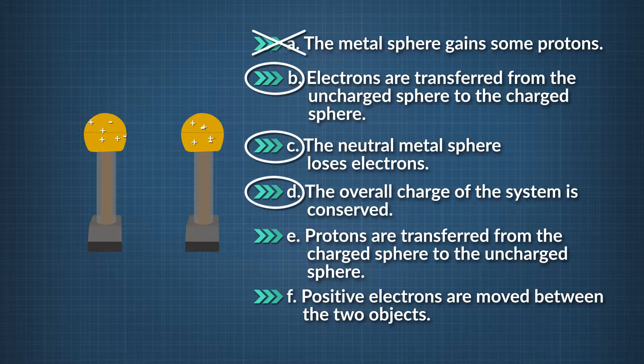E assumes protons and metals are mobile, but we've seen that the way atoms are arranged in metals means they are not. F gets the part about electron transfer right, but electrons have a negative and not a positive charge. Overall, this statement is not correct.